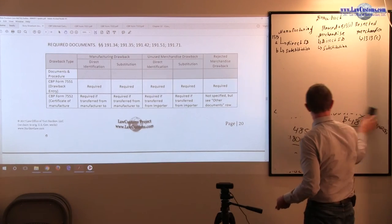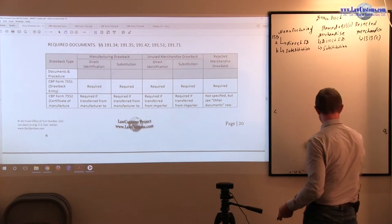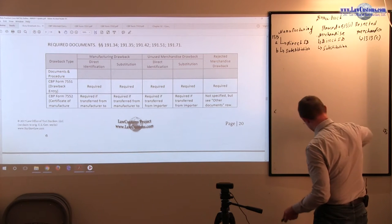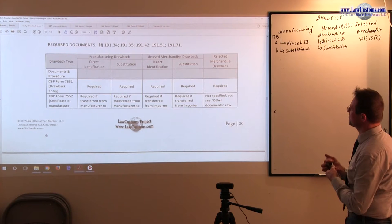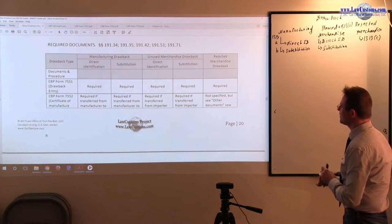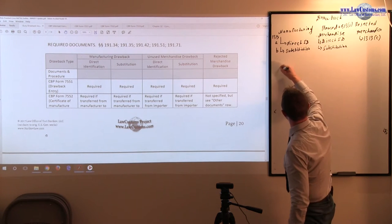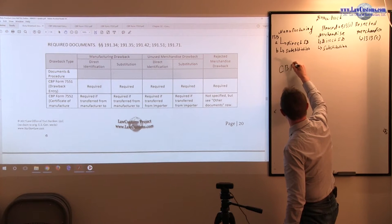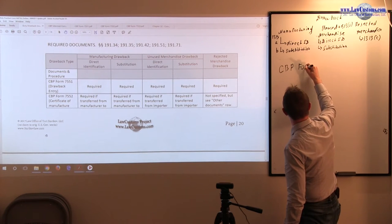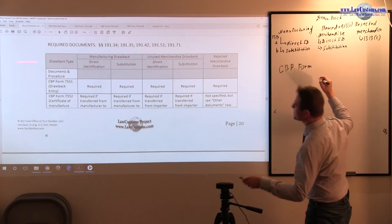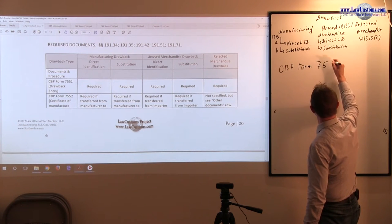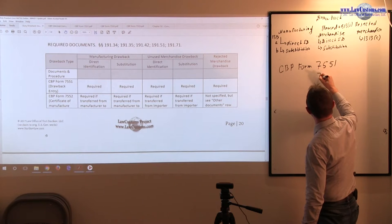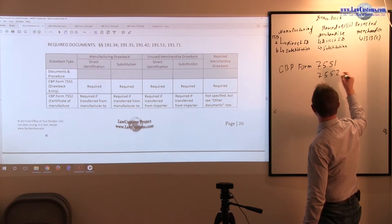One of the things which we need to be familiar with is a set of CBP forms. One form is CBP form 7551, which is a drawback entry.